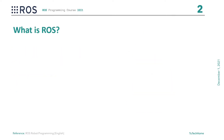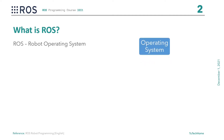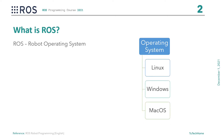ROS is an open source meta-operating system. As humans, we don't understand machine language. For communicating with machine hardware, we need a system that converts our input into machine input. That's where the OS comes in. OS provides a bridge between computer hardware and a human. There are many operating systems like Linux, Windows, and Mac OS. All these operating systems are used to understand the computer hardware language and communicate with them.